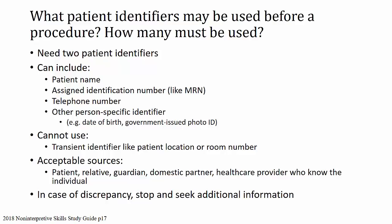Acceptable sources include the patient themselves, a relative, a guardian, a domestic partner, or a healthcare provider who knows the individual. In case of a discrepancy at any point, you should stop and seek additional information and go back to verify. If there's any question about identification, you've got to stop and confirm that.